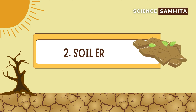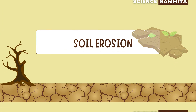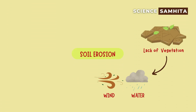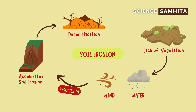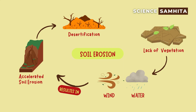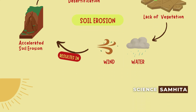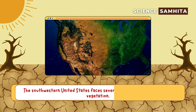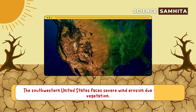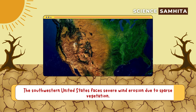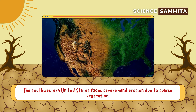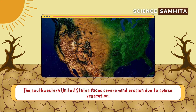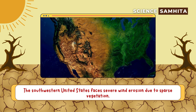Second, soil erosion. Accelerated soil erosion by wind and water occurs due to a lack of adequate vegetation. For example, the southwestern United States faces severe wind erosion due to sparse vegetation.